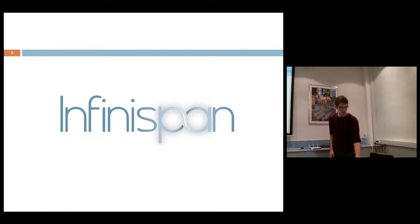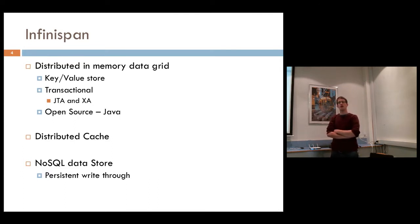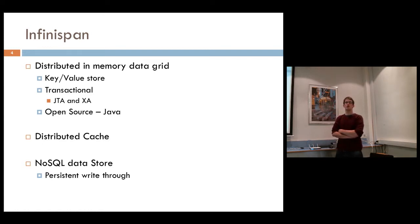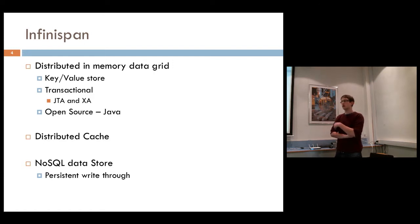So, what is InfiniSpan? InfiniSpan is a distributed in-memory data grid. It provides a key-value store to the user, and it provides a map-style interface to the application. It's open source and written in Java. What makes InfiniSpan interesting is it's actually transactional, unlike some other NoSQL flavors.